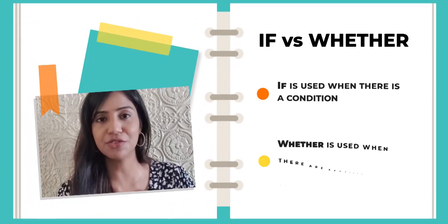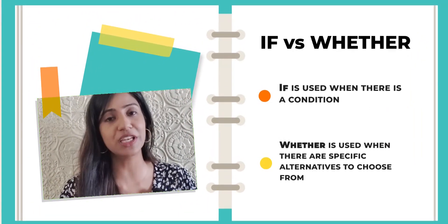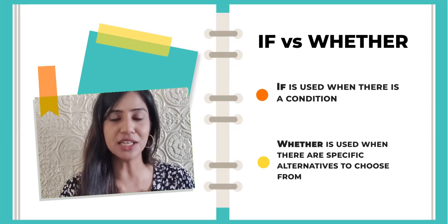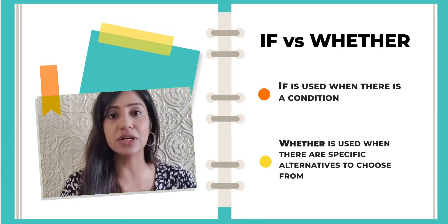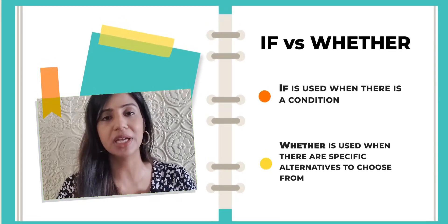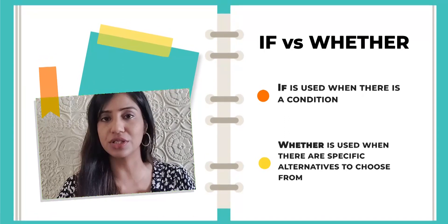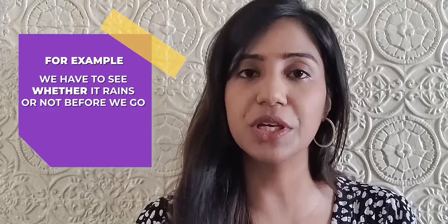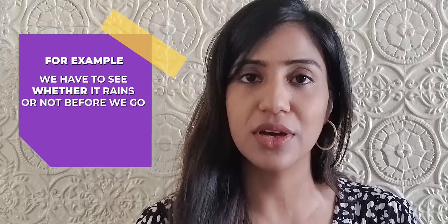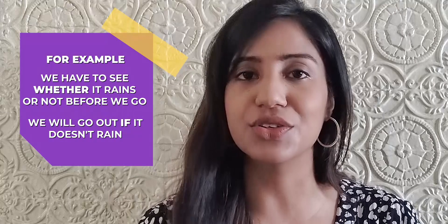Number 4: if versus whether. If is used when you are presenting a specific condition. Whether is used when you have specific alternatives that you can choose from — it is usually used when we have two alternatives. For example: we have to see whether it rains or not before we go out. Or: we will go out if it doesn't rain.